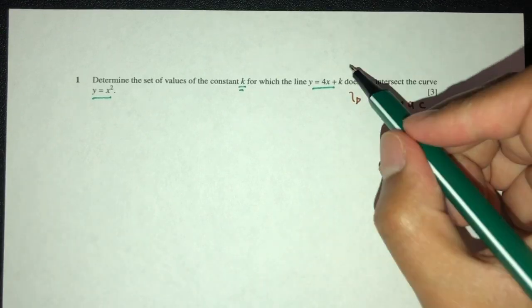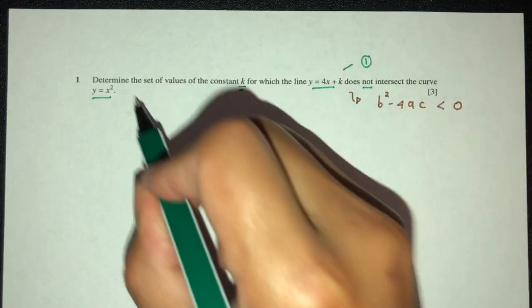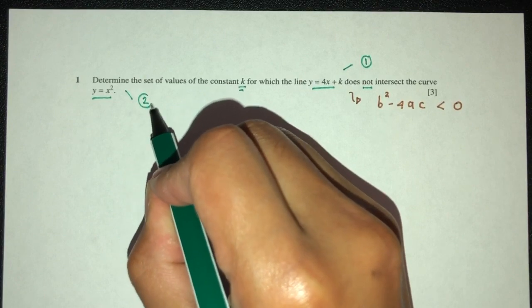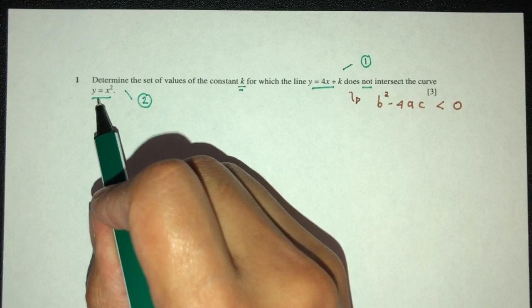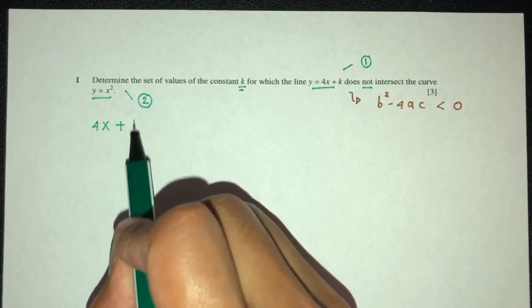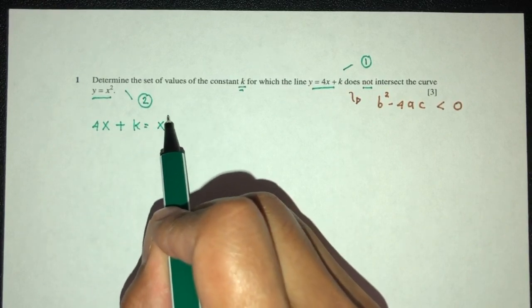So first thing first, we have two equations. This is the first equation and this is my second equation. Here we have y as subject already. We just replace in this y. You will have 4x + k have to be x².